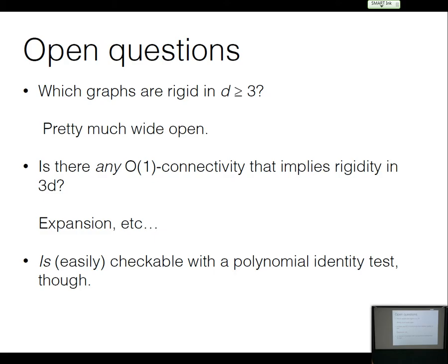You could pick your favorite property — expansion is even stronger than connectivity, and still it's open. Pick your favorite extremal property that is not, say, has a square root that is d+1 connected — probably nobody knows. So even though there's an easy randomized algorithm that will do it for you, if you're looking for combinatorial structure in 3D, the general problem is pretty open.